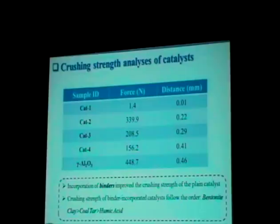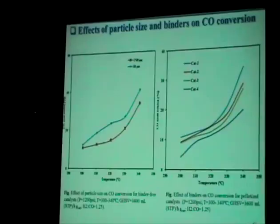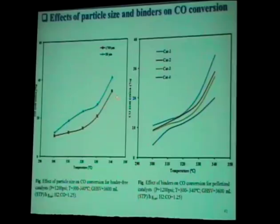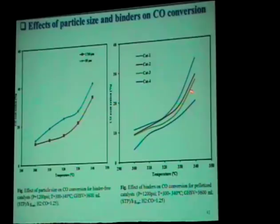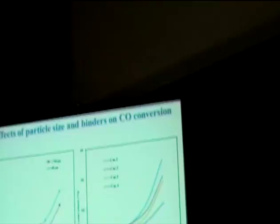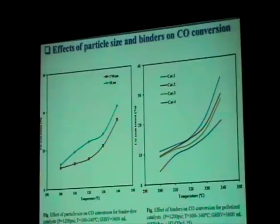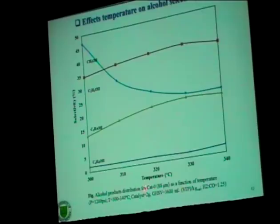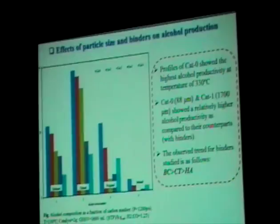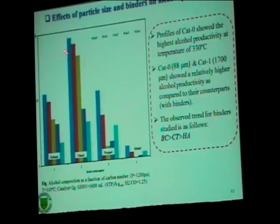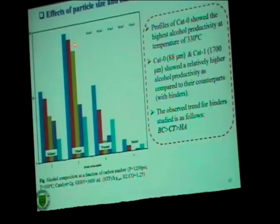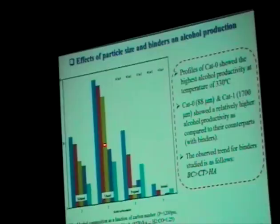The effect of CO conversion on particle size shows that increasing particle size to 7800 micron somewhat decreases CO conversion, as mass transport diffusion becomes dominant at larger particle sizes. The optimum temperature for the powder material is around 330°C for higher alcohol synthesis. The effect of particle size and binder on alcohol production — comparing methanol, ethanol, propanol, and butanol — shows the powder catalyst, 1700-micron no-binder pellets, and binder-incorporated pellets with bentonite clay and two other binders. The binders have a somewhat negative effect on higher alcohol synthesis.